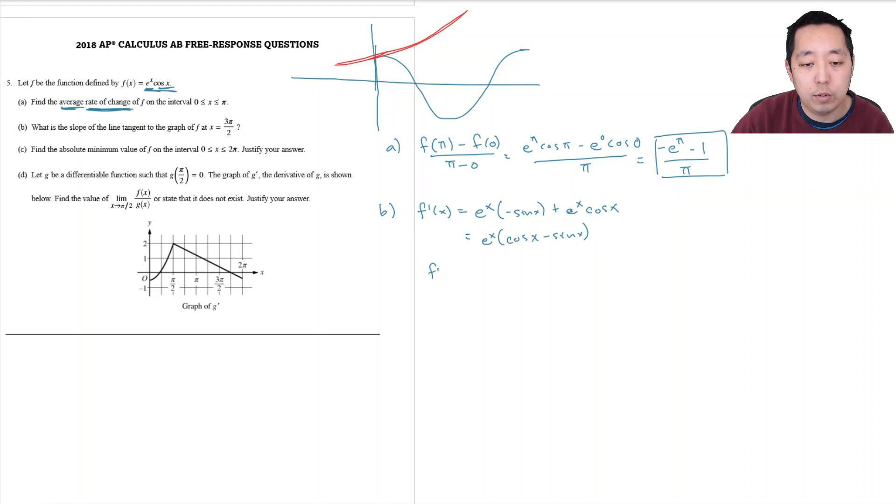And so then I want to know what the slope is at or the derivative is at 3 pi over 2 so that's e to the 3 pi over 2 times cosine of 3 pi over 2 minus sine of 3 pi over 2 and from our unit circle, 3 pi over 2 is down here, cosine is 0 and sine is negative 1. So all of this becomes positive 1 because sine is negative 1 but negative negative 1 is positive 1 is equal to e to the 3 pi over 2.